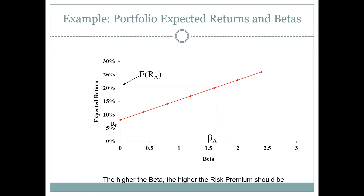I've graphed the risk-free rate at say seven percent — it's not usually that high; right now it's at about one percent — but I know one point for sure. That means if I can figure out the expected return and beta for one other asset, say asset A, I can draw a line between those two points and I have my relationship between risk and return. Let's assume I have asset A with an estimated beta of 1.6 and an expected return of 20%.